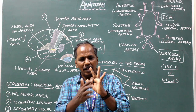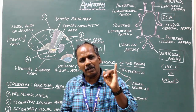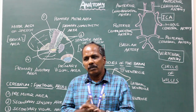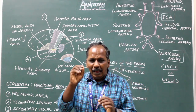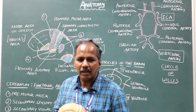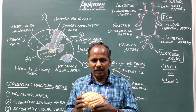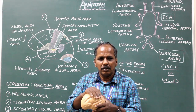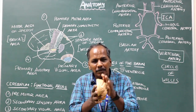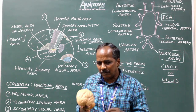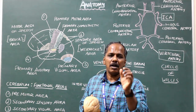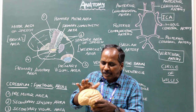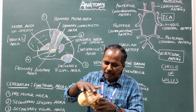Association fibers interconnect different regions present in the cerebral cortex of the same hemisphere. They are of two types: short association fibers and long association fibers. Short association fibers connect adjacent gyri.